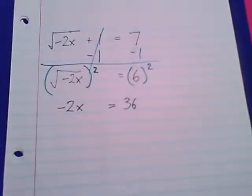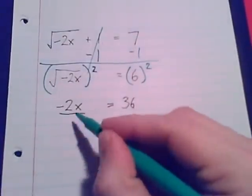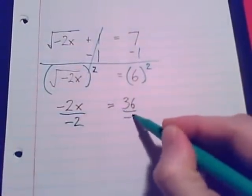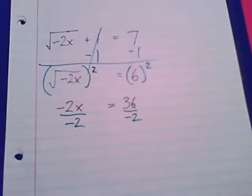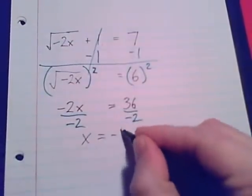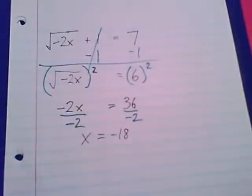Remember, this is an equation. We're trying to find the solution. What does x equal? So there's one last move, divide by negative 2. There's our solution. x equals negative 18.